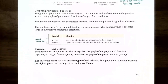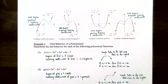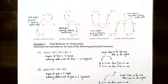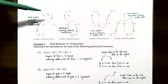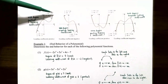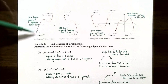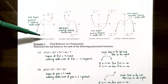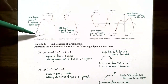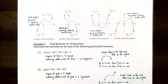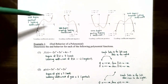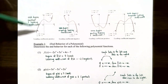There are four possible types of end behavior for a polynomial function based on the degree and the sign of the leading coefficient. Case 1: odd degree and positive leading coefficient. As x approaches positive infinity, the y values also go to positive infinity — the graph rises to the right. As x approaches negative infinity, the y values go to negative infinity — the graph falls to the left. For odd degree, the ends of the graph have opposite behavior.